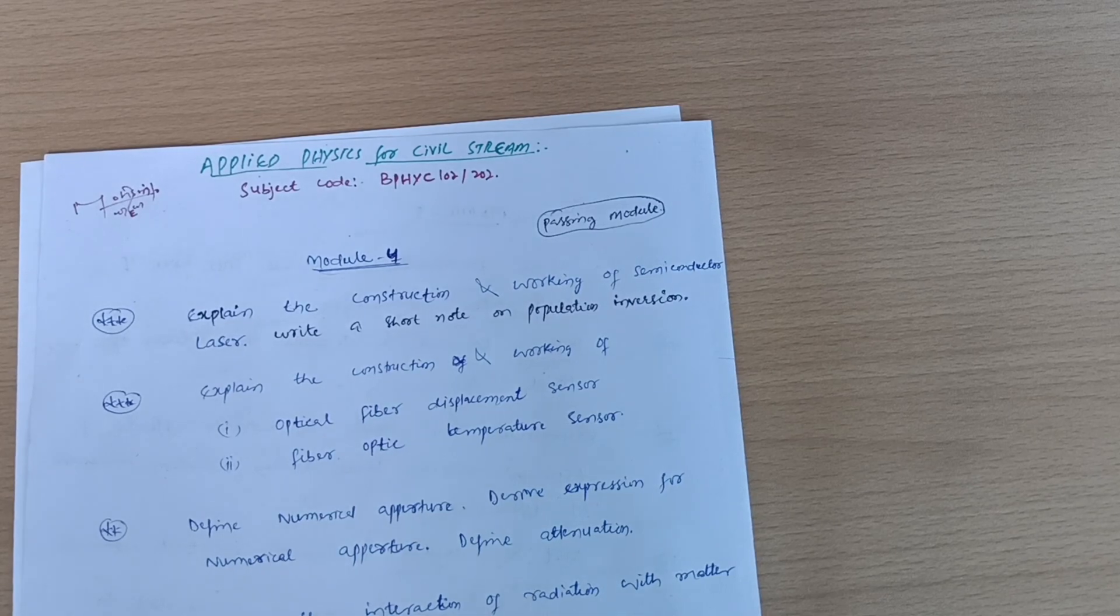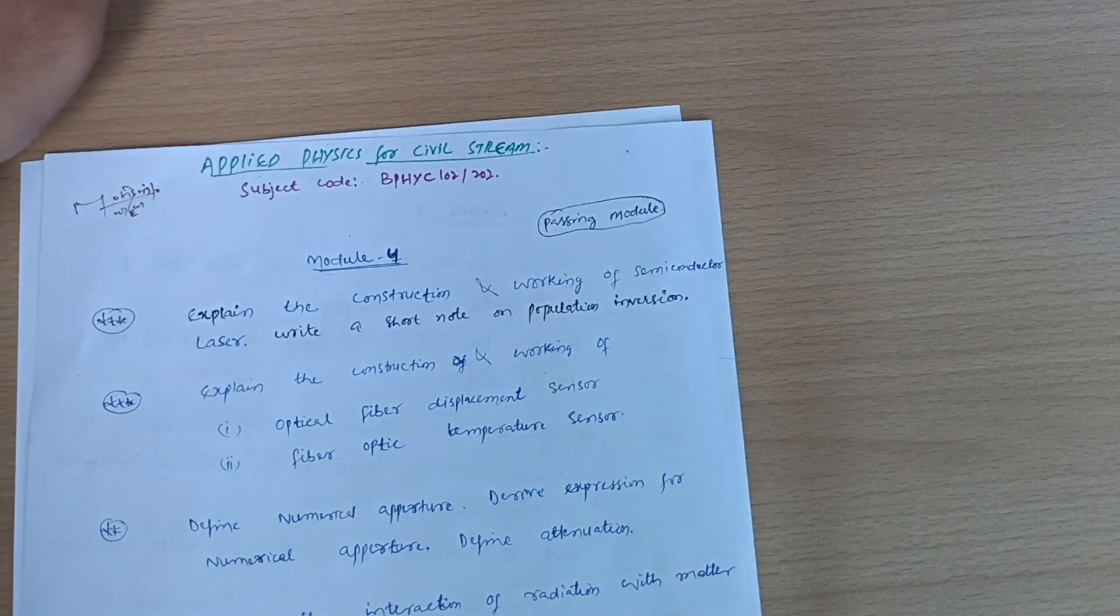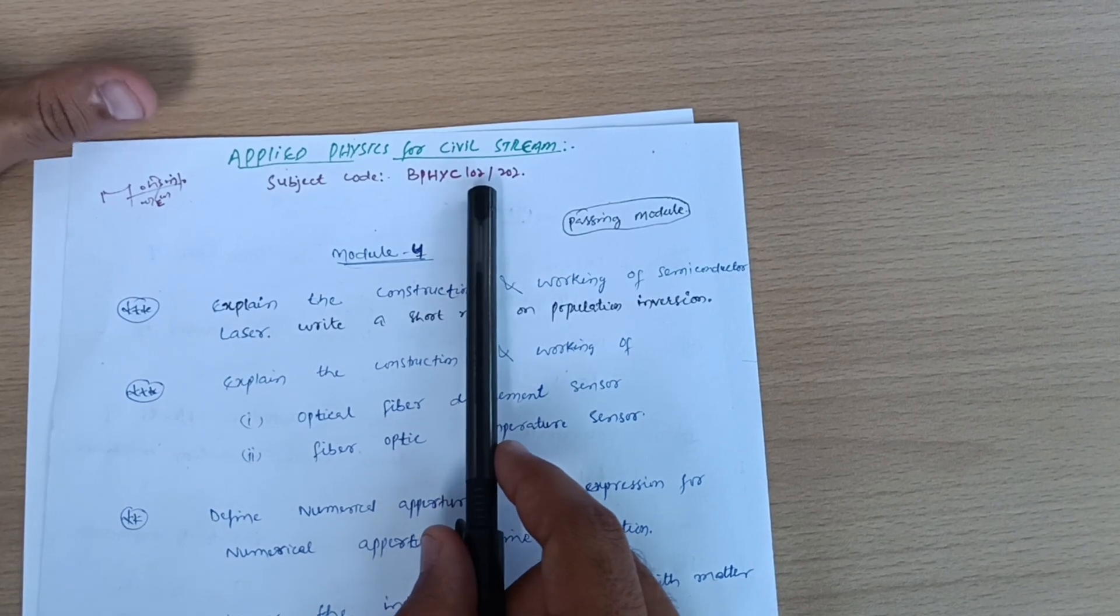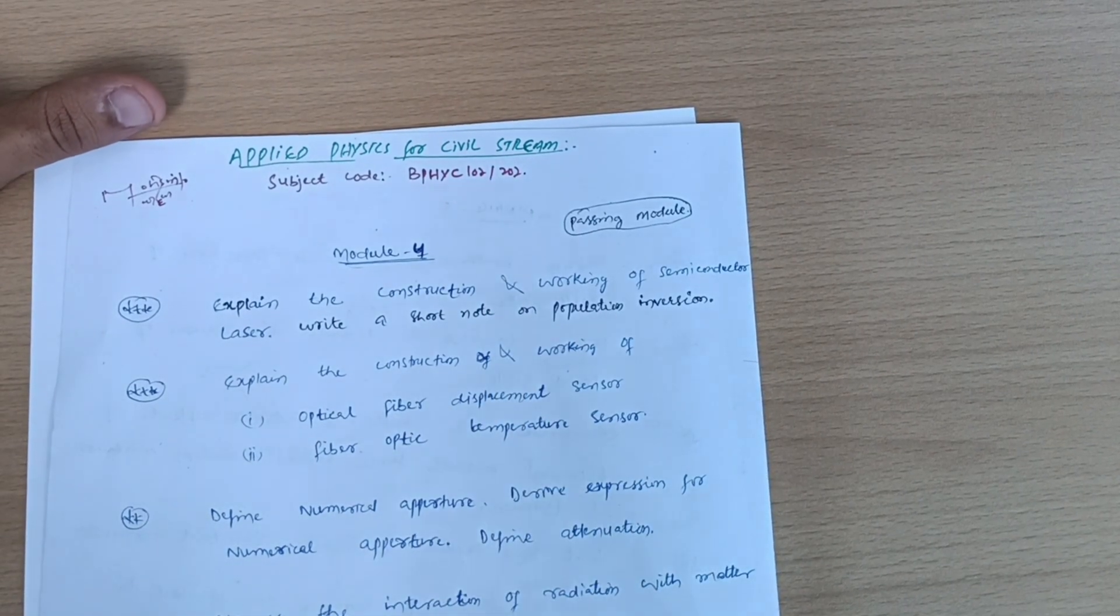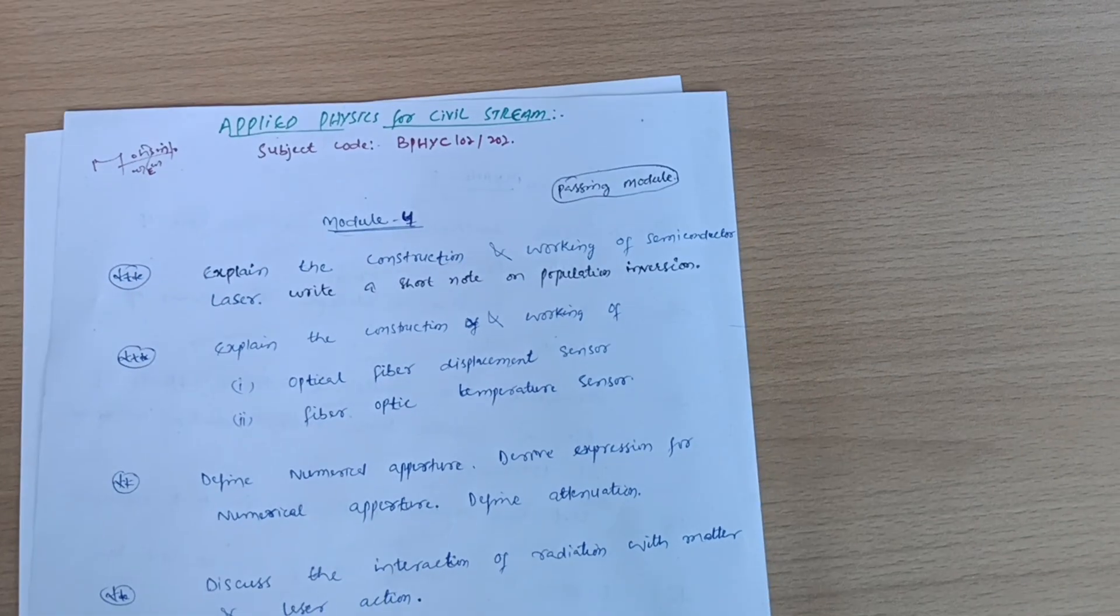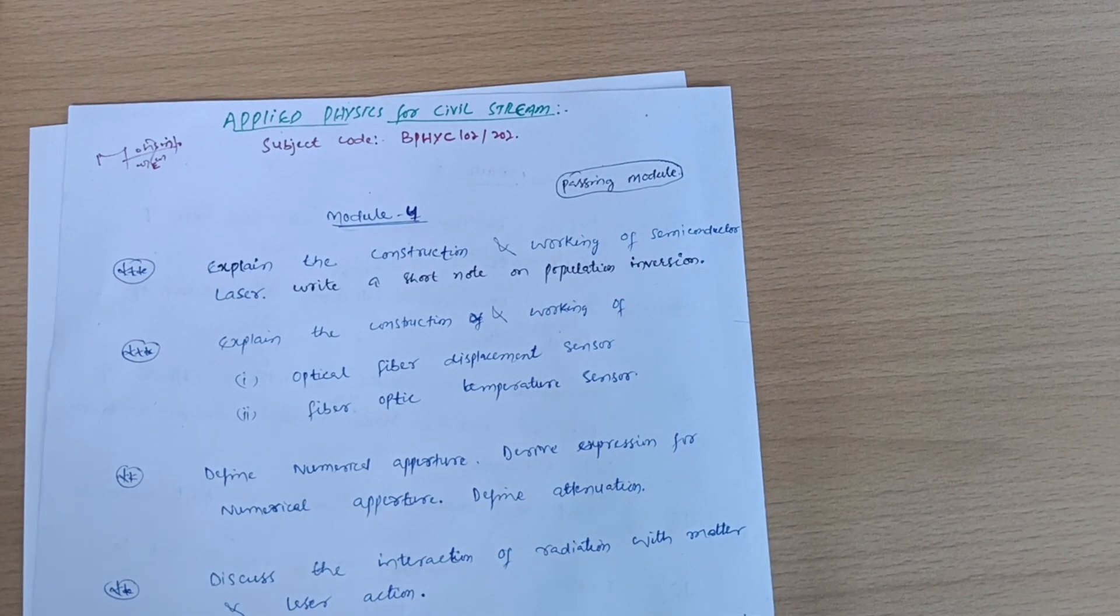Today I am with Applied Physics for Civil Stream, subject code BP HYC 102 or 202. If somebody is having backlog in the first semester, they can also refer to this important video. Let me start with the passing module, which is Module 4.